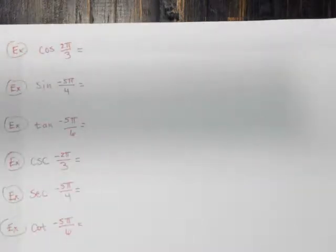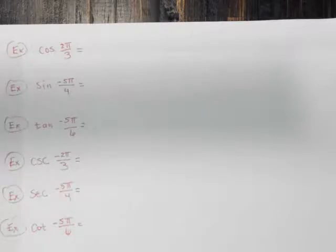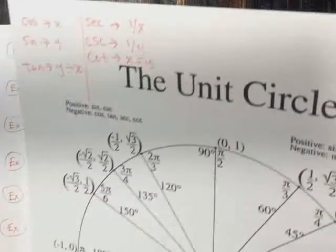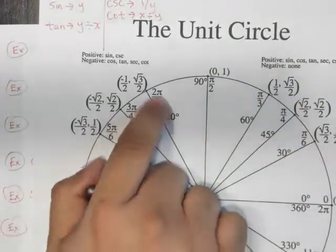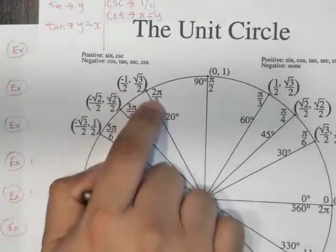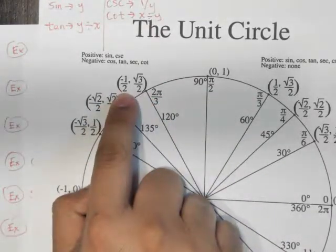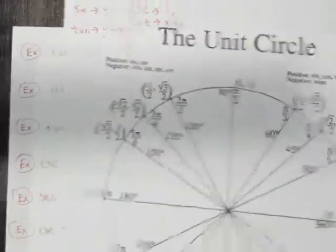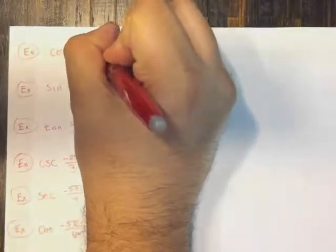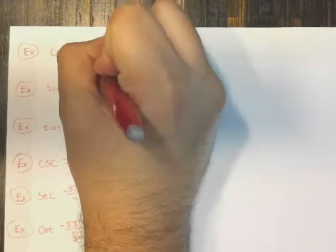Let's go ahead and take a look at some examples using the unit circle. We've got the cosine of 2π/3. We're looking at the x-value at 2π/3, and that's one of the cardinal points on the circle. Negative 1/2 is the answer — that one was quick and easy. Negative 1/2.